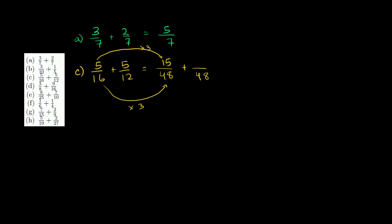And then to get from this 12 to this 48 right there, we had to multiply times 4. So then to get to 5 to this numerator over here, we have to multiply times 4. 5 times 4 is 20. Now we have the same denominator.